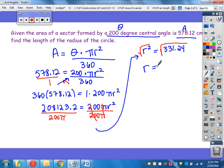so when I do that, that leaves me with the radius equals, I'm going to take the square root of 331.24, and that leaves me with 18.19995, which, if I round that to the nearest tenths place, would be 18.2.